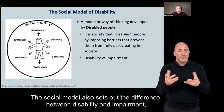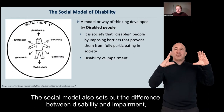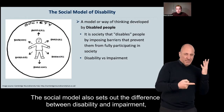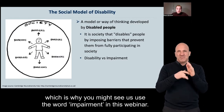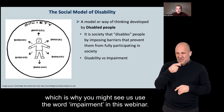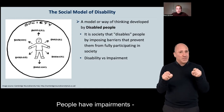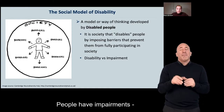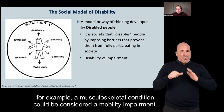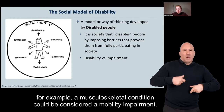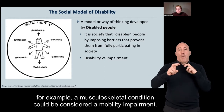The social model also sets out the difference between disability and impairment, which is why you might see us use the word impairment in this webinar. People have impairments — for example, a musculoskeletal condition could be considered a mobility impairment.